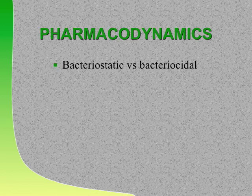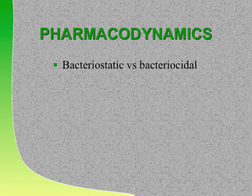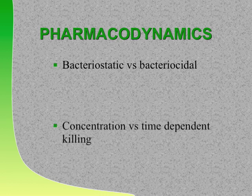Here are some quick points about pharmacodynamics. When do we want bactericidal antibiotics? For what infectious clinical syndrome? You want cidal drugs for endocarditis, osteomyelitis, and meningitis—things that are life-threatening. We want cidal drugs for bacteremia and severe infection, and for neutropenic, immune-suppressed patients. Static drugs inhibit the bugs but may not necessarily kill them.